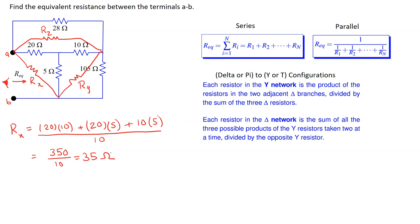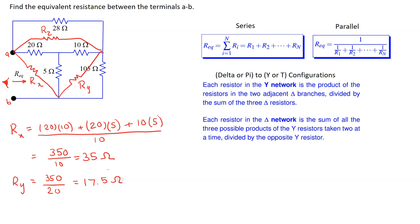Similarly, we can find Ry. In the numerator, we have the sum of all three possible products, which gives 350. In the denominator, it's the opposite Y resistor, which is the 20 ohm resistor, giving a value of 17.5 ohms. And then Rz is given by 350 divided by the opposite Y resistor, which is the 5 ohm resistor, giving the value 70 ohms.